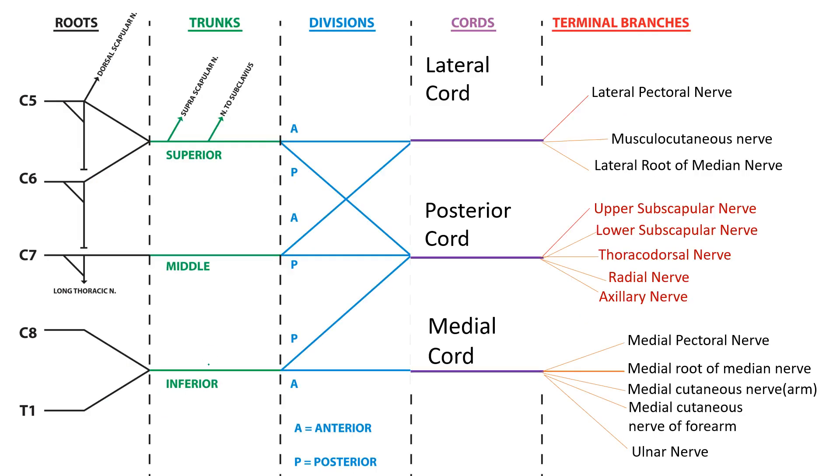So, quick revision. Roots, trunks, divisions and cords finally giving terminal branches. C5 and C6 roots join to form the superior trunk, C7 continues as middle trunk, C8 and T1 form the inferior trunk.